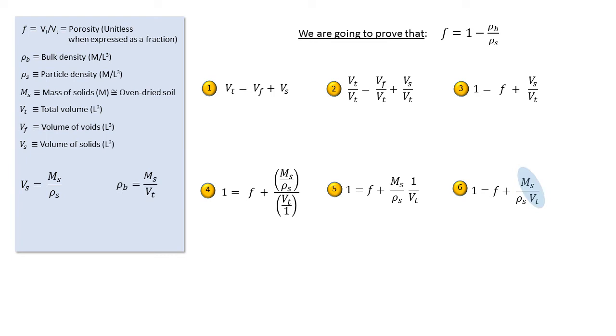Also, it is interesting to notice that we can rearrange this formula here. And we get the following. We get particle density equal to mass of solids divided by the volume of solids. Now, if we compare particle density and bulk density, we see that the only difference is actually in the denominator.